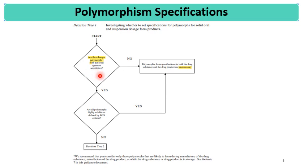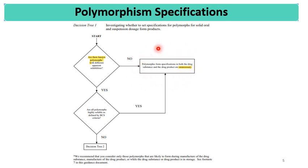If there are different polymorphs with different apparent solubilities, the next question is: are all polymorphs highly soluble as per BCS? If yes, it is still unnecessary to have polymorphic form specification for both drug substance and drug product, because they do not affect critical requirements like bioavailability, dissolution, and stability. If the polymorphs differ in solubility and are not highly soluble, proceed to Decision Tree 2.